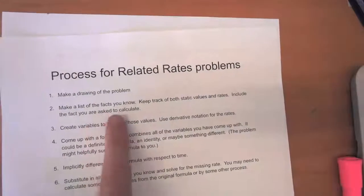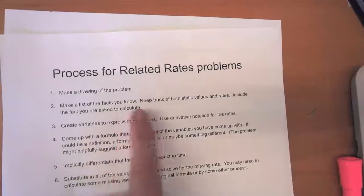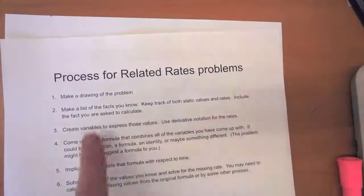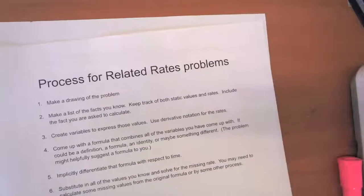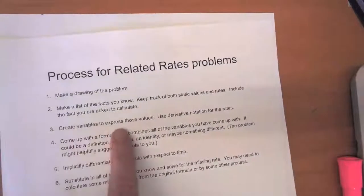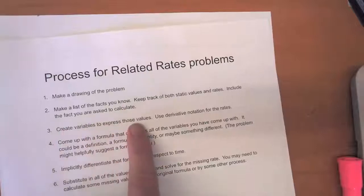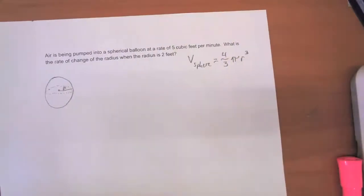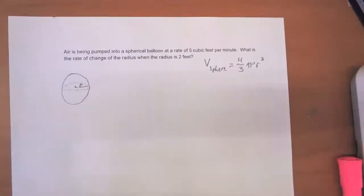We want to make a list of the facts that we know or just circle them in the problem. We want to keep track of both the static values and the rates. We want to include the fact that we're being asked to calculate. Then we'll combine that with step three, which is creating variables to express those values and using derivative notation when we're talking about the rates. So see if you can do that for this problem.